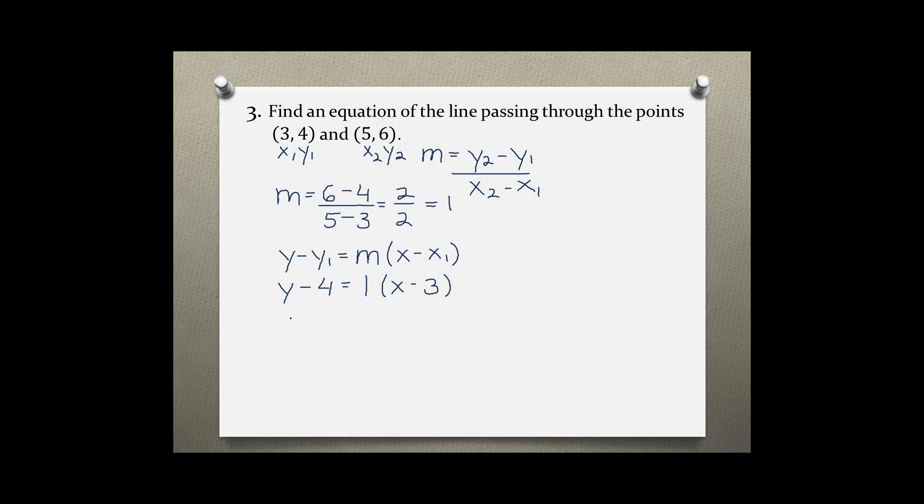Usually I choose the easier point, and in this case (3,4) is definitely easier as we are dealing with smaller numbers. So simplifying this equation we get y - 4 = x - 3, solving for y.